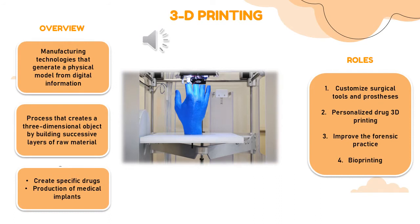The first technology we have here is 3D printing. What is 3D printing? It is a manufacturing technology that generates a physical model from digital information, meaning it is a process that creates a 3D object by building successive layers of raw material. Each new layer is attached to the previous one until the object is complete. Usually, the objects produced come from a digital 3D file, such as a computer-aided design (CAD) drawing or from an MRI image.